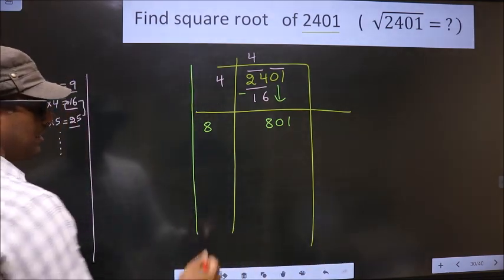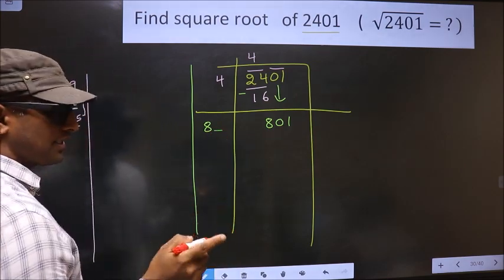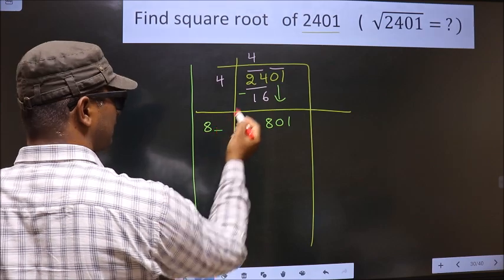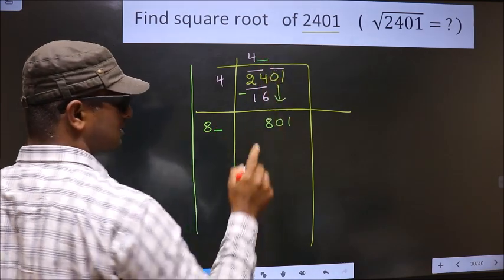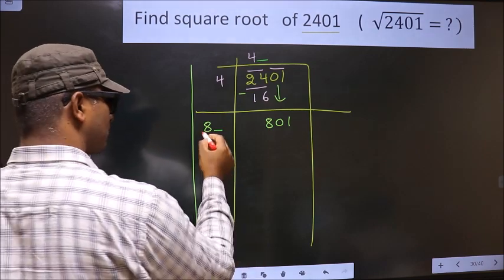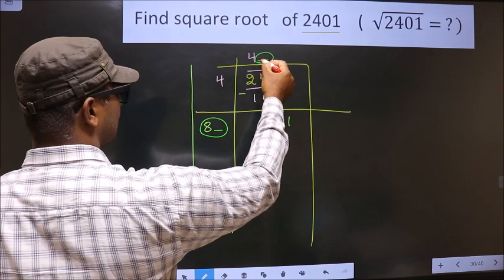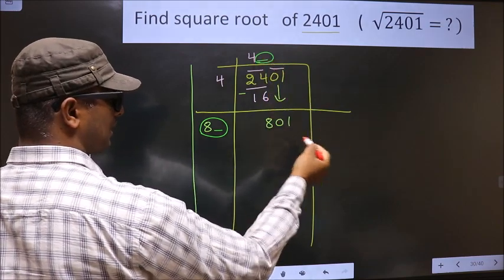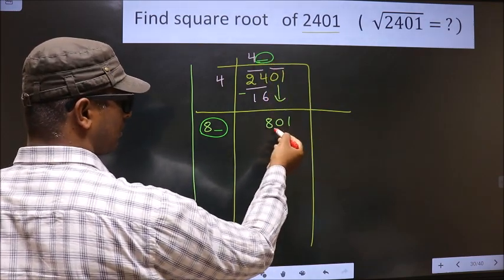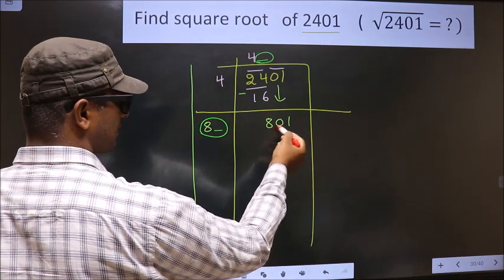Now I should write a number here. The condition is whatever number I write here, here also I should write the same number. And also when we multiply this number and this number we should get a number either equal to or less than this but not exceeding this number.